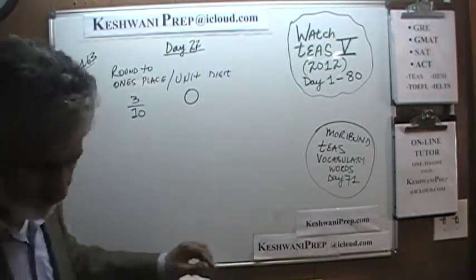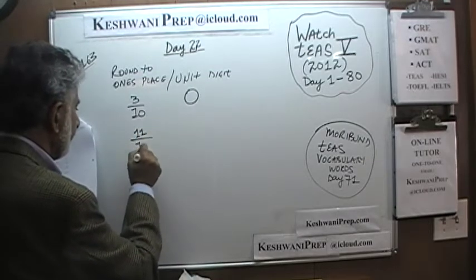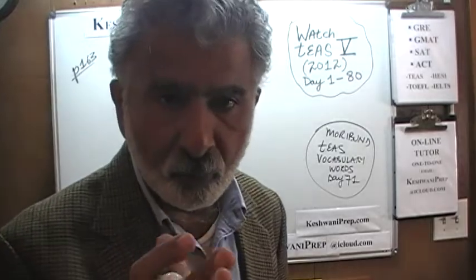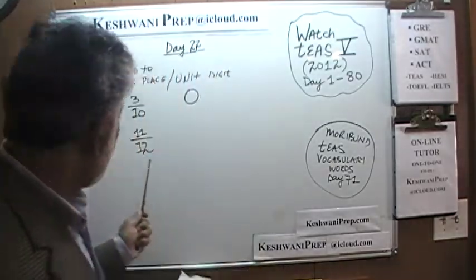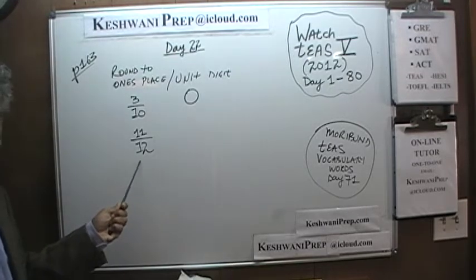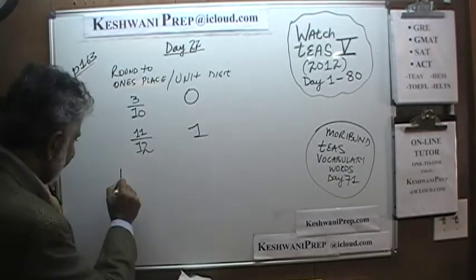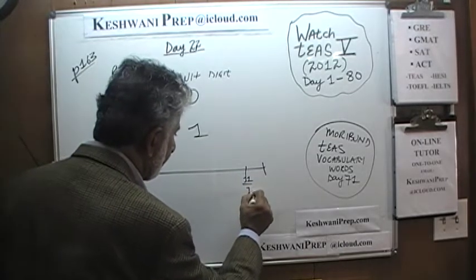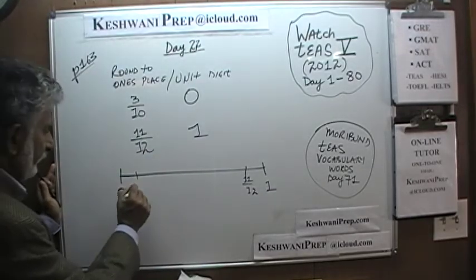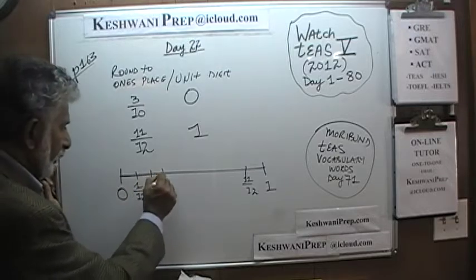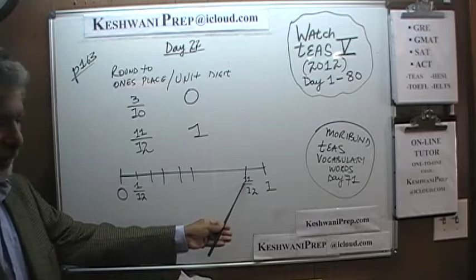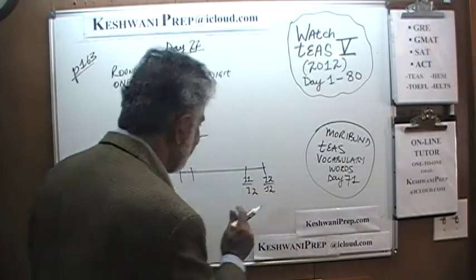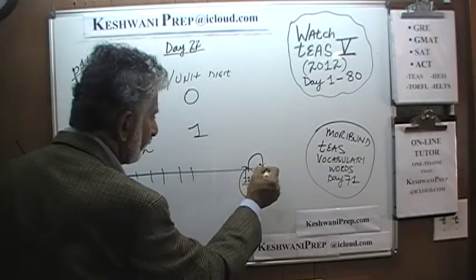Let's do one more — how about 11 over 12? Same thing. 11 over 12 will fall right here, closer to 1 than it is to 0. So if it's 6 or more over 12, we round it up. 11 over 12 is very close to 12 over 12, which equals 1. So when you round 11/12 to the nearest one's, it becomes 1.